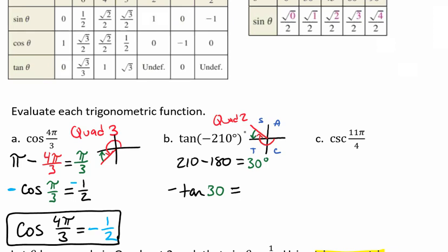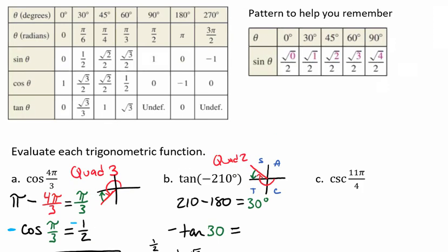Because we're in the second quadrant, only our sine functions are positive there. We're going to have negative tangent of 30. The tangent of 30 degrees is going to be, if we look at our table, radical 3 over 3.